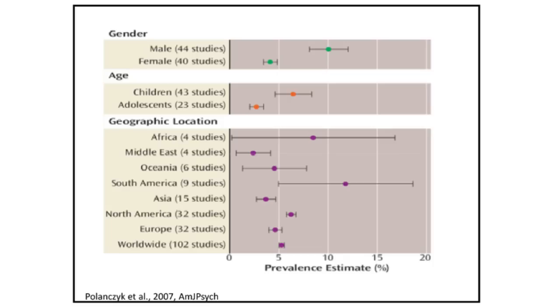There's an age effect — higher prevalence in children and lower prevalence as you get older — and also a gender effect. The average is about 5%, but in males the summary rate is around 10%, with a lower value in females. This is reflected in child clinics where about 80% are boys and 20% girls. That ratio does seem to change in adult clinics, where many more women come forward, and there's much discussion as to why the ratio shifts with age.